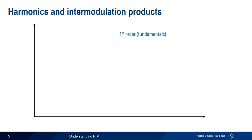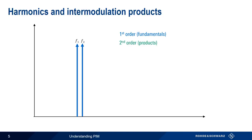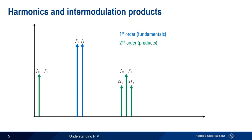The two fundamental, or first order, tones can create a very large number of harmonics and intermodulation products. Second order products include the two second harmonics, 2F1 and 2F2, as well as the basic sum and difference signals, F2 plus F1 and F2 minus F1. When it comes to third order products, we have the third harmonics of the fundamentals, 3F1 and 3F2, and then four additional third order products.